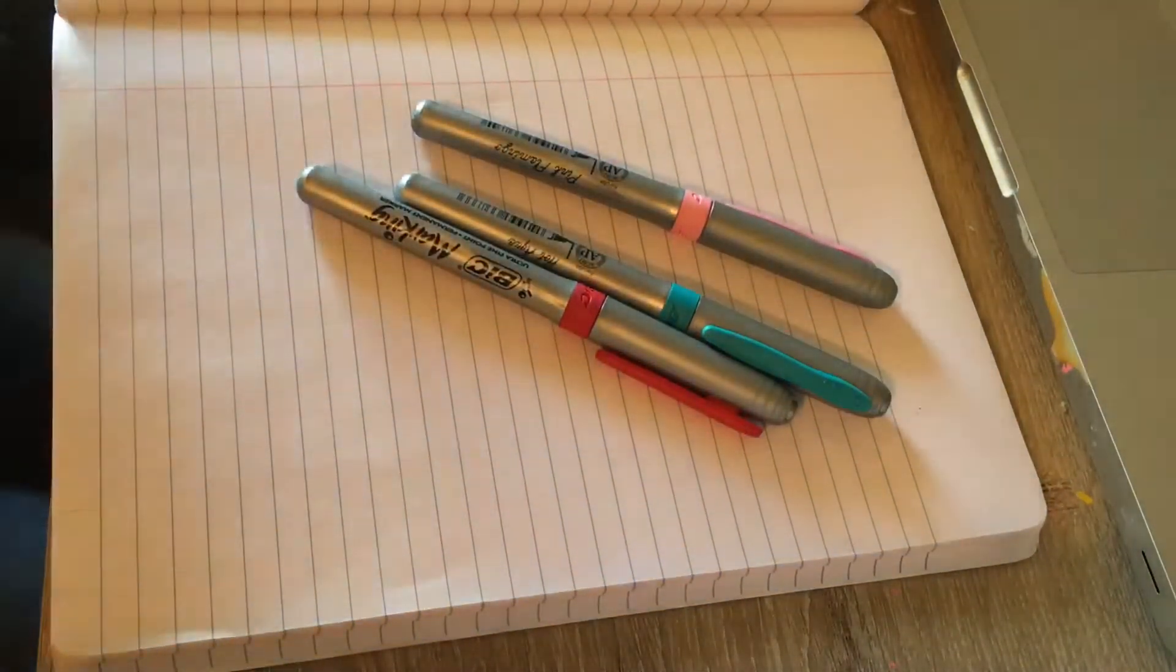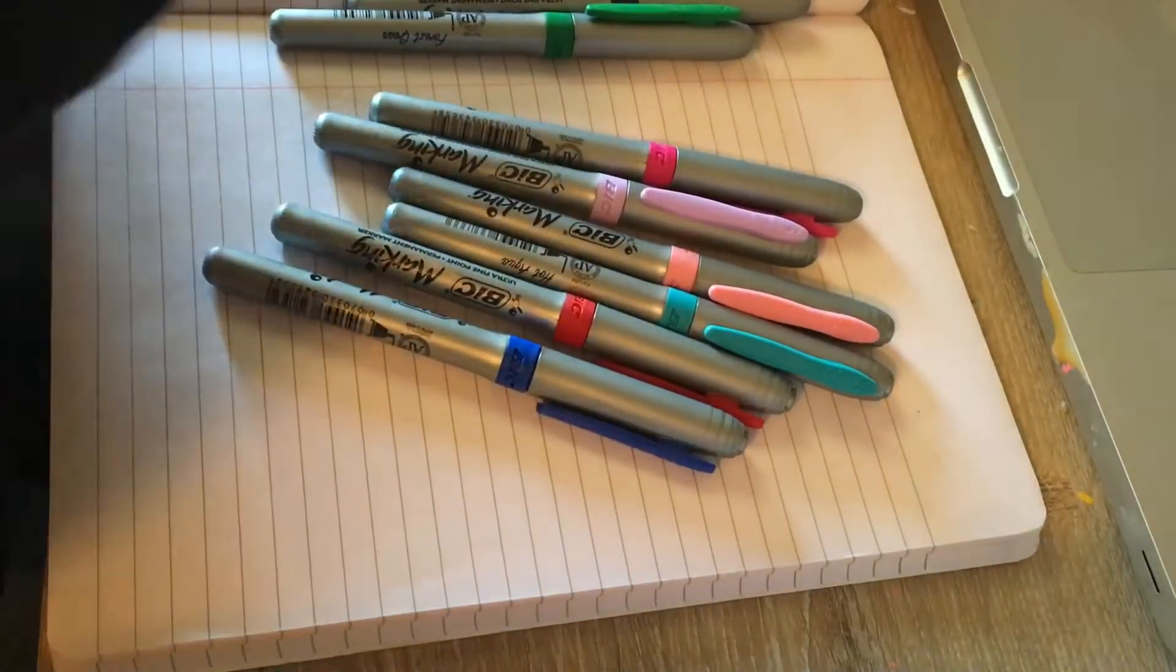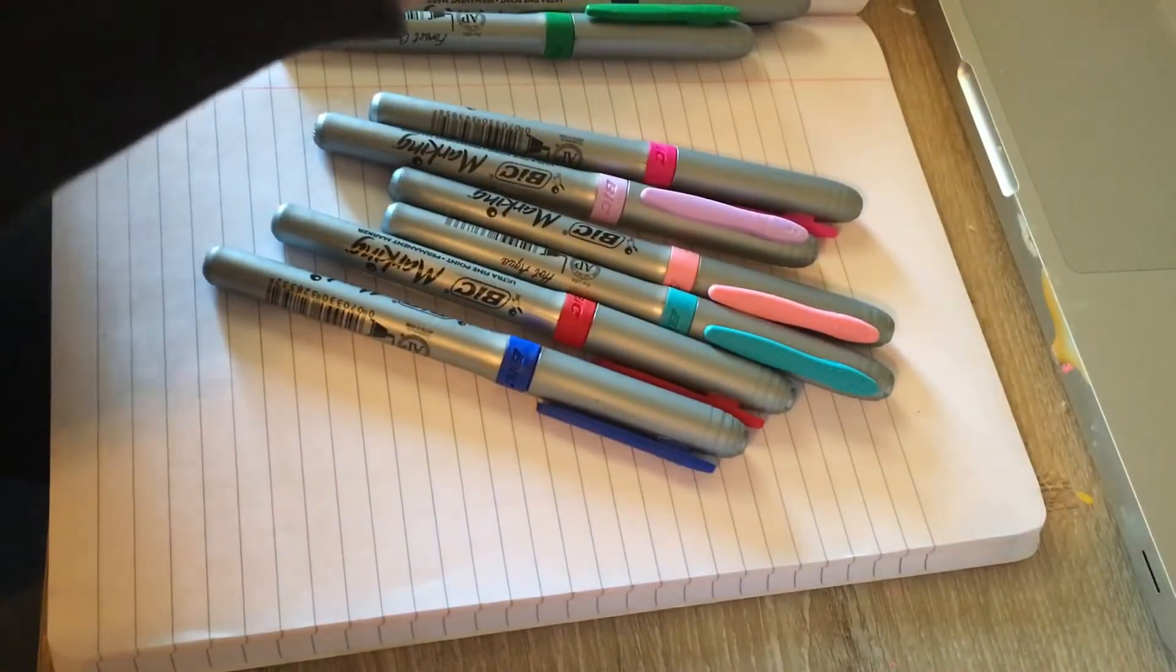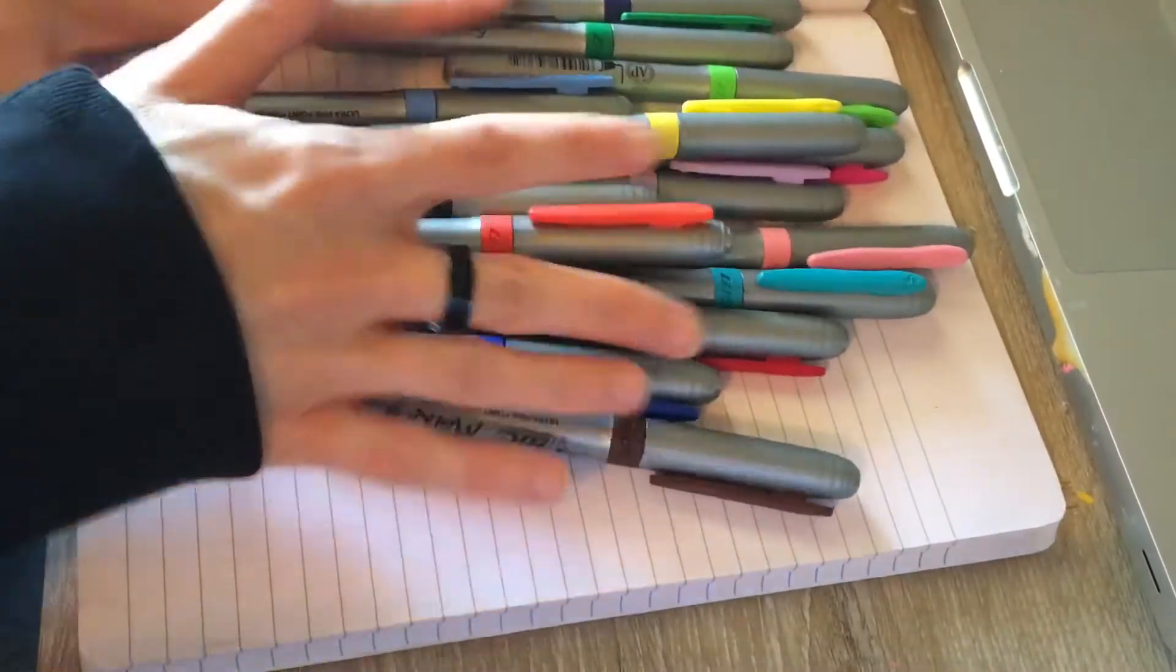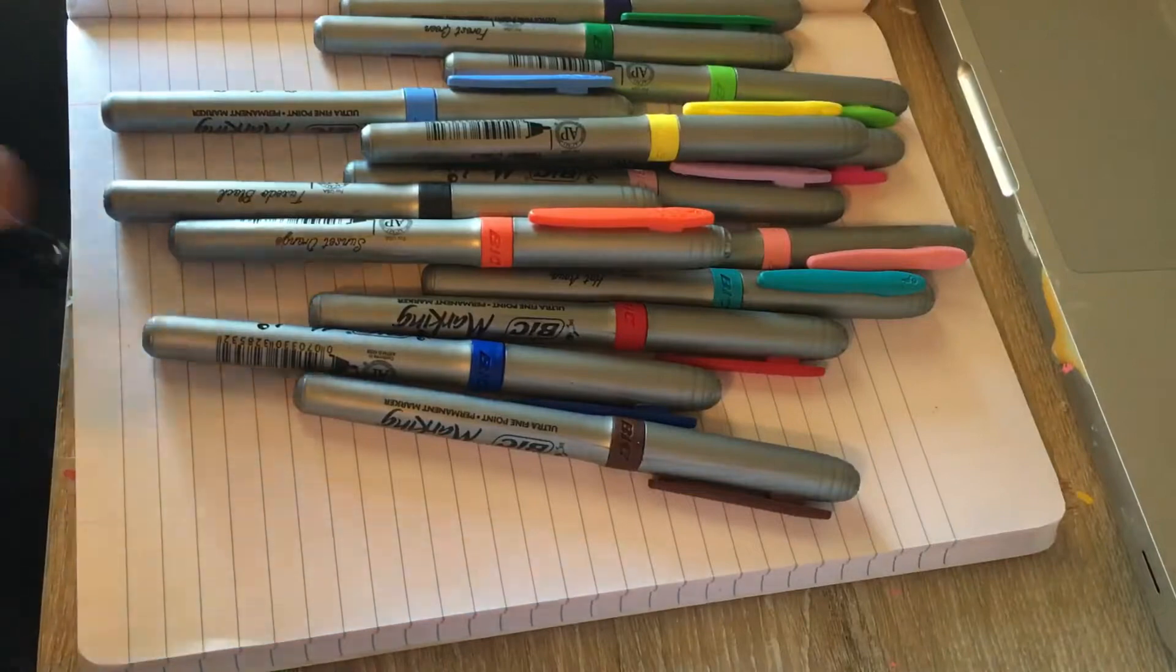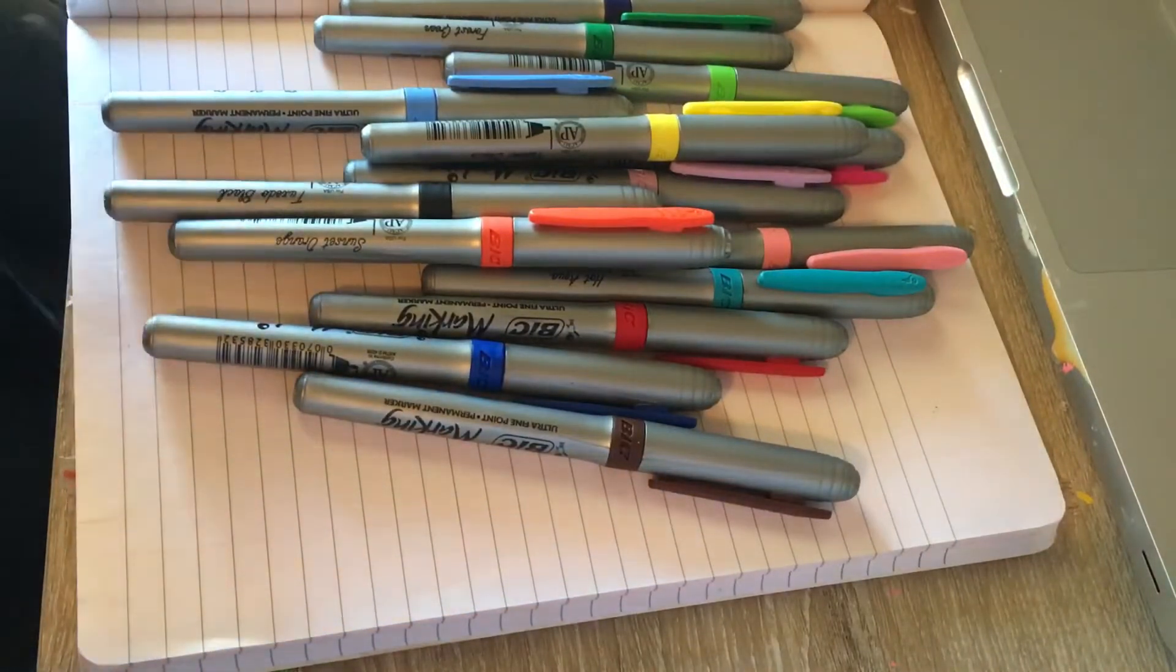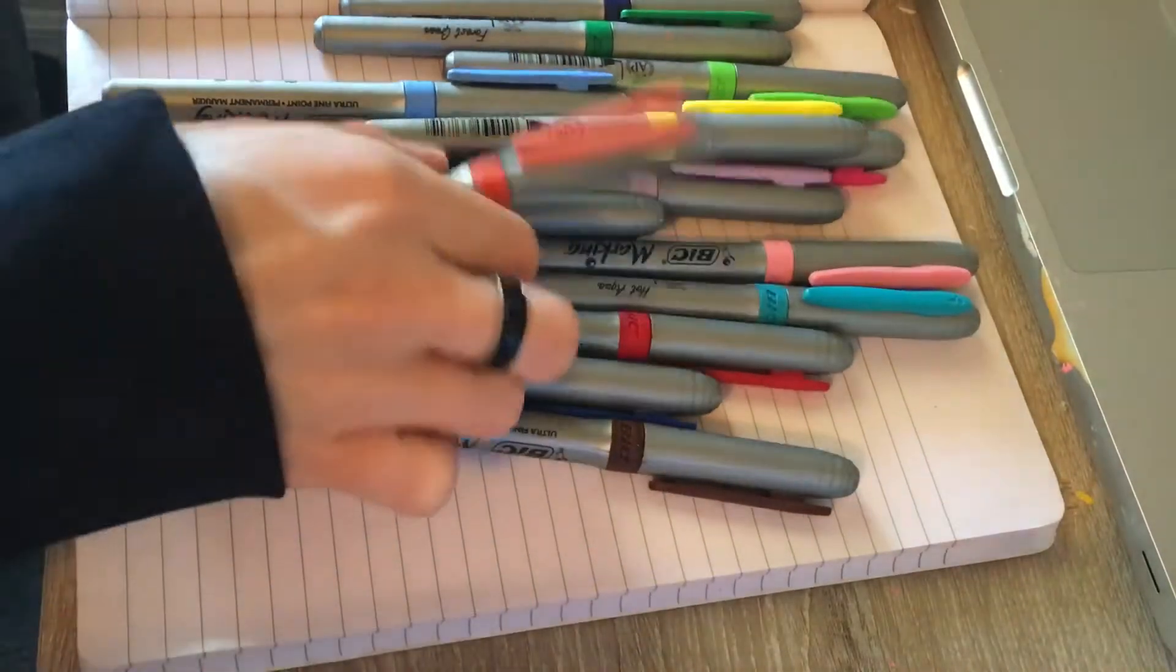Okay. So these Bic markings come in a set of a lot of colors. I think it's 16. Or no it's 12. It's 12 colors. Here they all are right here. And I'm going to show you one by one what color they are and if they bleed through or not. So let's just start with this one.